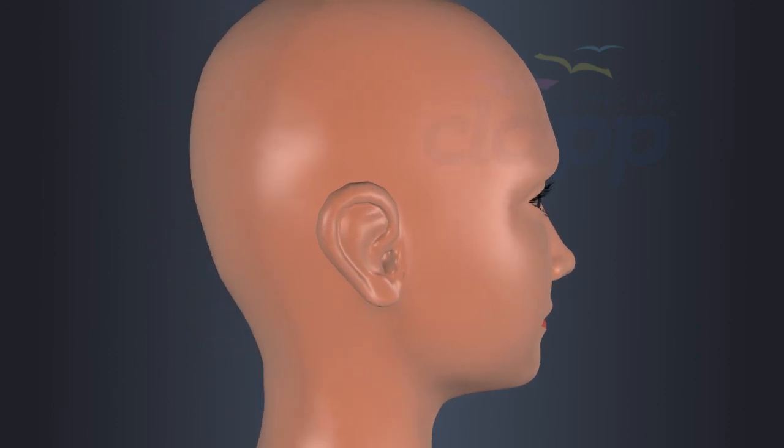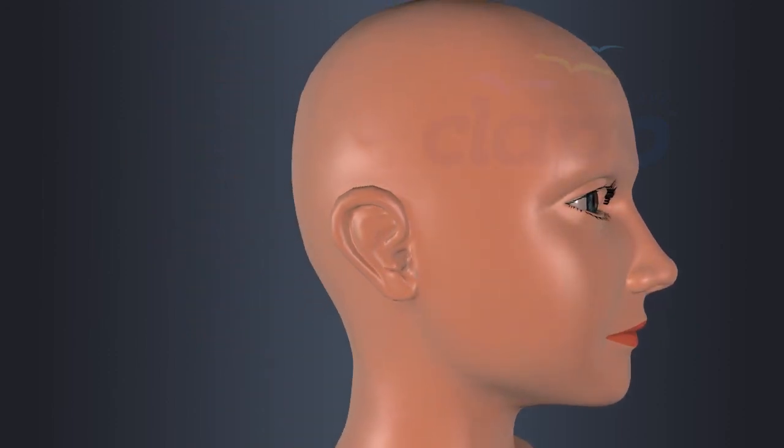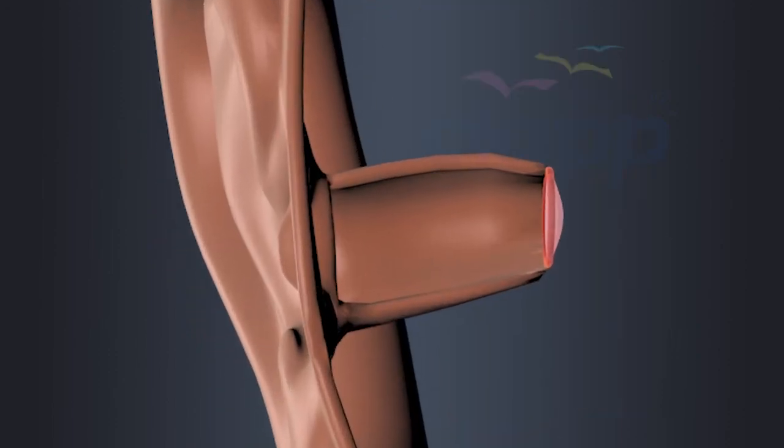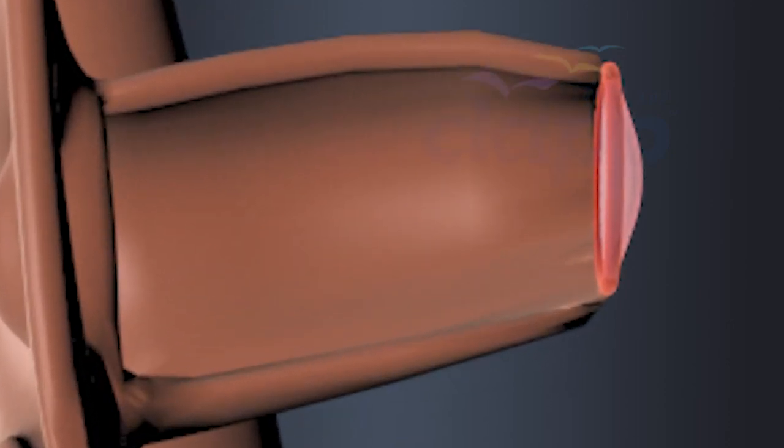Outer ear. This includes the visible part called pinna, auditory canal, and tympanum or eardrum.